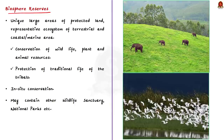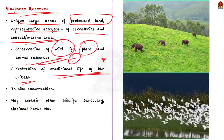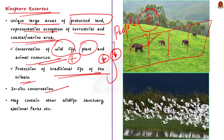Biosphere reserves are large areas of protected land that are unique. They are representative ecosystems of terrestrial areas and coastal or marine areas. The land is protected for the conservation of wildlife, plant and animal resources, along with the protection of the traditional life of tribals living in the area. Biosphere reserves are special environments for both people and nature, and they represent in-situ conservation — endangered species are protected in their natural habitat so the entire ecosystem is protected. A biosphere reserve may also contain other protected areas like wildlife sanctuaries and national parks.